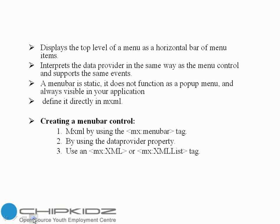The Menu Bar Control displays the top level of a menu as a horizontal row of menu items, where each item in the bar can pop up a sub-menu. The Menu Bar Control interprets the data provided in the same way as the Menu Control and supports the same events as the Menu Control. A Menu Bar is static — that is, it doesn't function as a pop-up menu.